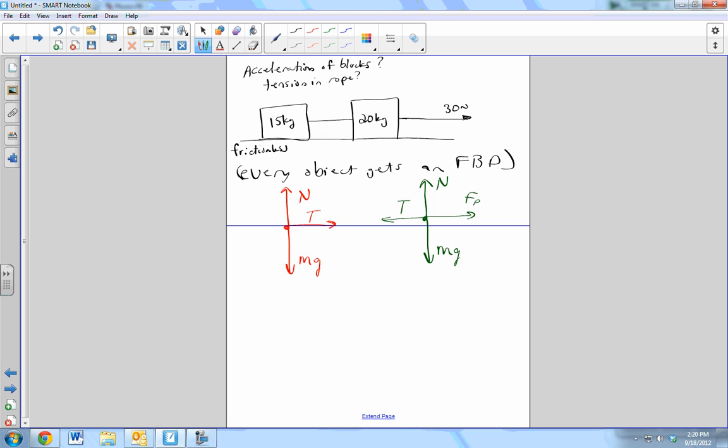Now, these two tensions are the same. Newton's third law says that if one object pulls on another, the original object pulls on it with the same amount of force, but in the opposite direction. Third law. Newton's third law.